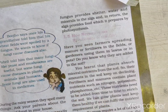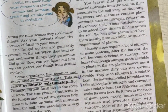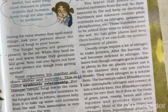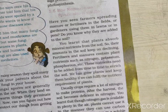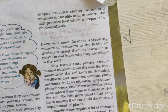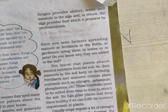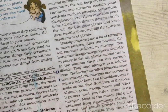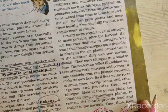In organisms called lichens, a chlorophyll-containing partner — which is an algae — and a fungus live together. The fungus provides shelter, water, and minerals to the algae, while the algae provides food prepared by photosynthesis in return, since algae has chlorophyll. This is a symbiotic relationship, and lichens are the example of symbiotic relationship.